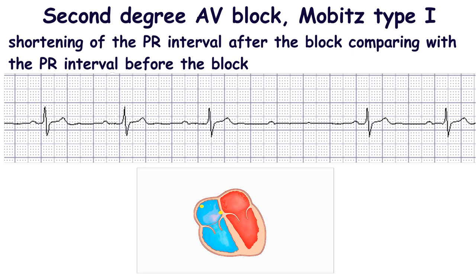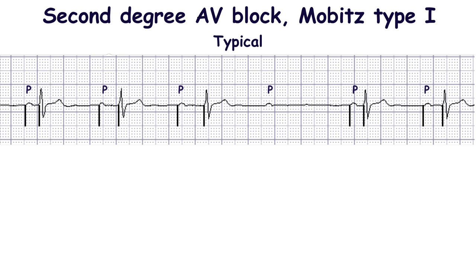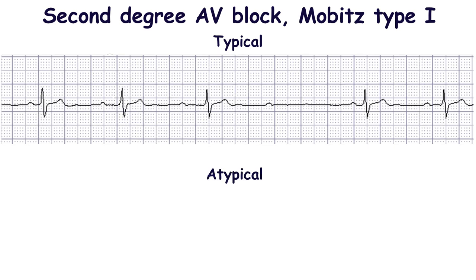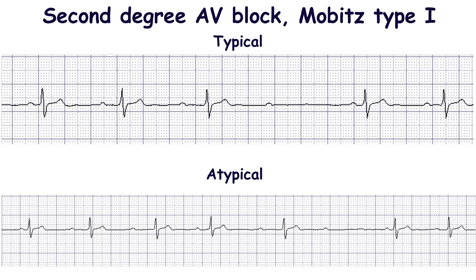Sometimes there is a relationship between the P wave and the QRS complex, for example 3 to 2, 4 to 3, 5 to 4, or 6 to 5. Wenckebach periodicity may be typical or atypical. In the case of a typical one, there is a progressive prolongation of the PR before the non-conducted P wave. In the case of atypical Wenckebach periodicity, there is shortening or lengthening of the PR interval in the middle of the cycle.